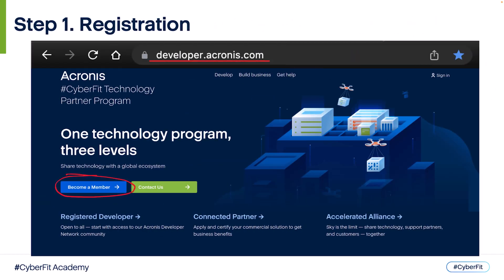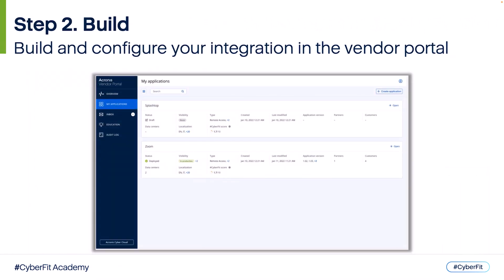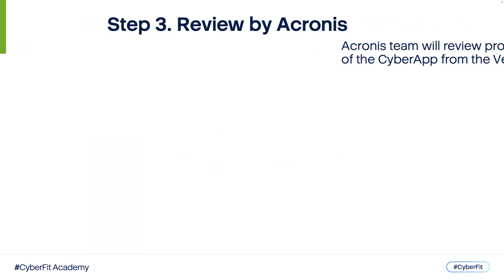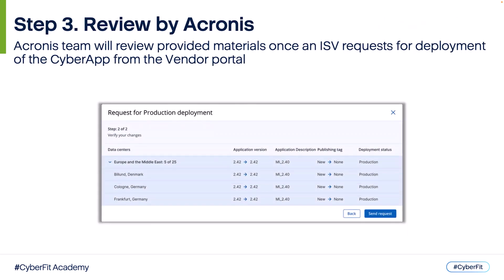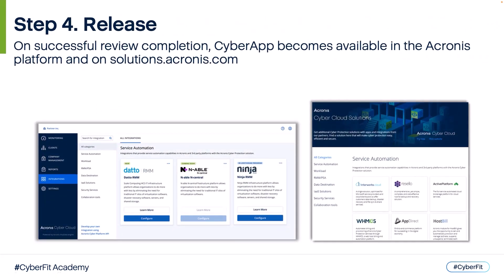Here you see a screenshot of developer.acronis.com — you have to register here and complete Step 1 of the lifecycle. Once Step 1 is complete, you get access to the Vendor Portal and other resources. The Vendor Portal will be explained in detail in later courses, but for now think of it as a web application you will use to create and manage the Cyber App. The Acronis Team will review provided materials once an ISV requests deployment of the Cyber App from the Vendor Portal. The final step is releasing the Cyber App — once released, it becomes available to all or selected Acronis customers.